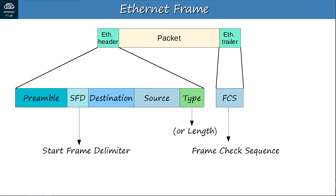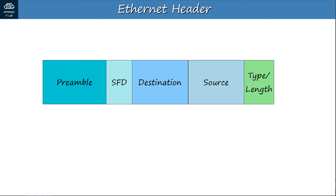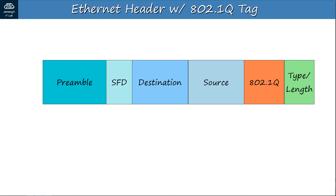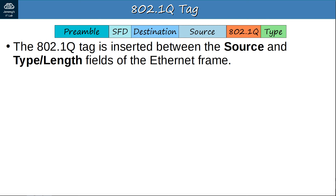Here's an Ethernet header slide from Day 5 on Ethernet switching. The dot1Q tag is actually inserted between two fields of the Ethernet header — specifically between the source MAC address and the type or length fields. The 802.1Q tag is 4 bytes, or 32 bits, in length, and is inserted between the source and type/length fields of the Ethernet frame.